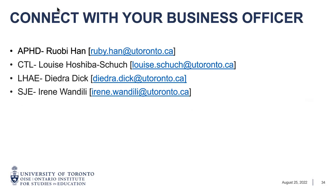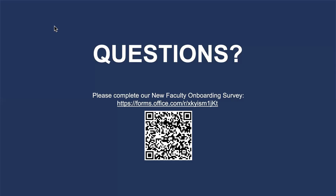The last important thing to note is who your business officers are. Depending on which department you're in, we've listed the names and contact information here. These folks are great as a first point of contact, especially if you're brand new to the institution and don't know where to begin — even if you're still waiting on your hiring documents. Please reach out to your business officers as you see fit. That's it for the main part of our session today. We'll take questions, and there is a form you can scan with a QR code — just three questions about how we did in this session and any additional questions you have.